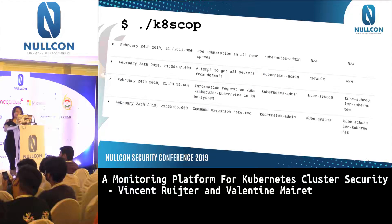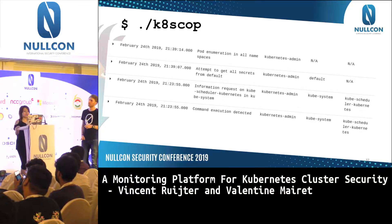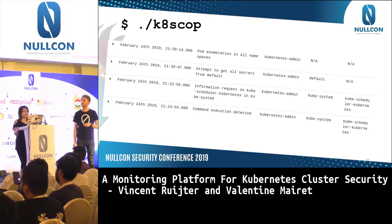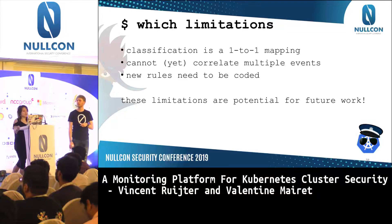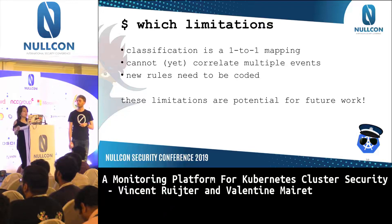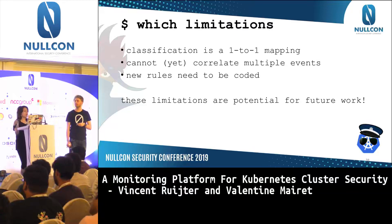In Kibana, KScope alerts show the timestamp, description, user, namespace, and pods concerned. The description shows things like 'pod enumeration of all namespaces' or 'attempt to get all secrets from default namespace'. It provides information about what exactly happened, with additional details like the kubectl command. However it does have limitations: the classification is a one-to-one mapping — regex to event — so we cannot yet correlate multiple events, which would be useful for detecting more complex attack traces. Also the detection rules are hardcoded, so it would be nice to be able to add rules through an interface.